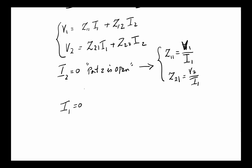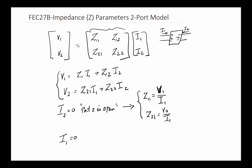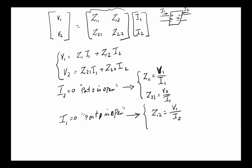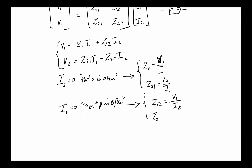Next, if I1 = 0, that means port 1 is open. From the first equation we get Z12 = V1/I2, and from the second equation Z22 = V2/I2. The reason these are called impedance parameters is that all four Z values are obtained by dividing voltage by current, giving units of ohms — which is indeed impedance.